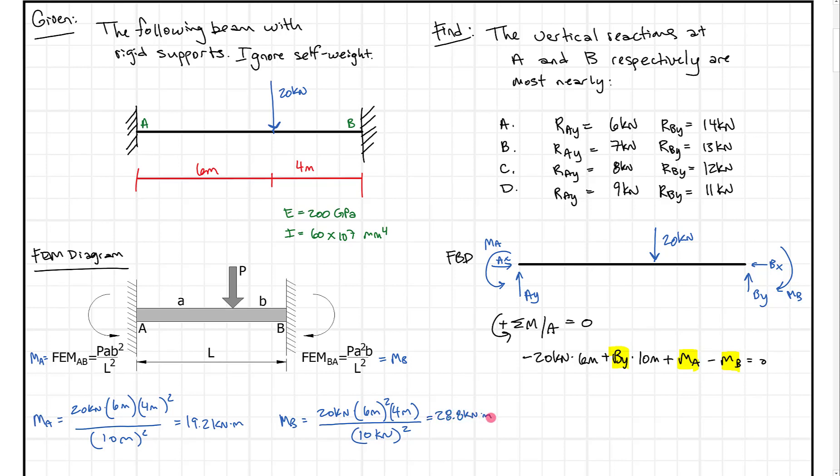The good news is we just solved for these two unknowns in this equation, so what that leaves is essentially one equation with one unknown, which we can solve. If we plug that in, all we have to do is solve for By - put all these pieces on the right hand side, leave By on the left hand side, and when we get down to the end, we get By equal to 12.96 kilonewtons.